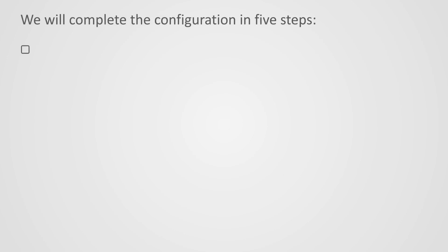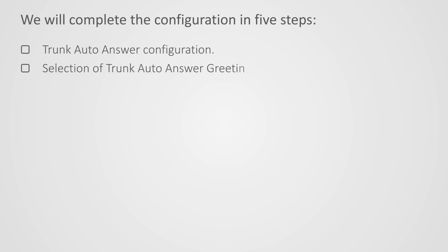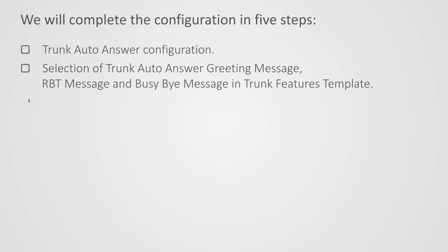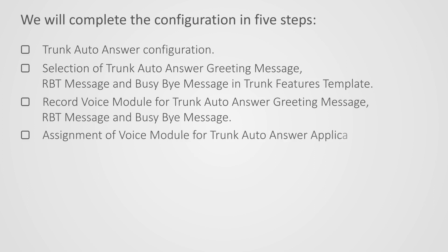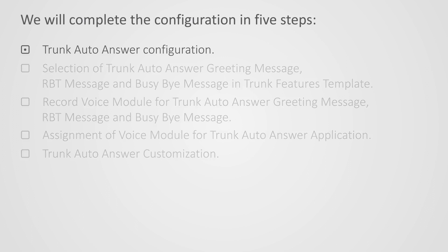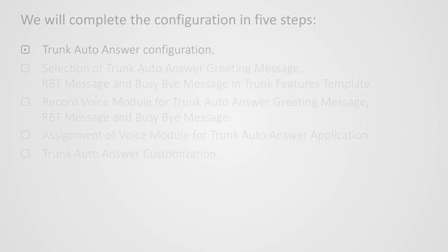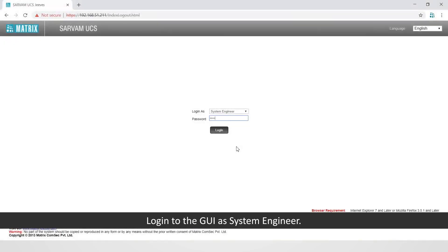Let us go through the configuration now. We will complete the configuration in five steps. First, trunk auto answer configuration. Second, selection of trunk auto answer greeting message, RBT message and busy-by message in trunk feature template. Third, record voice module for trunk auto answer greeting message, RBT message and busy-by message. Fourth, assignment of voice module for trunk auto answer application. Fifth, trunk auto answer customization. Let us start with the first step of configuring trunk auto answer — login to the GUI as system engineer.